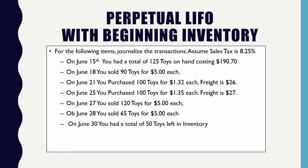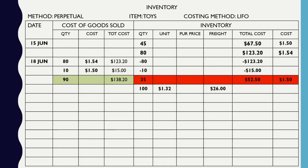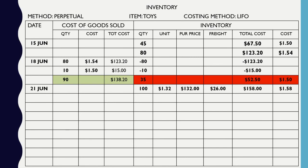On June 21st, you end up purchasing 100 toys at $1.32 with a freight of $26. Plug that in — $132 plus $26 gives you $158, divided by 100 gives you $1.58. Color code it.